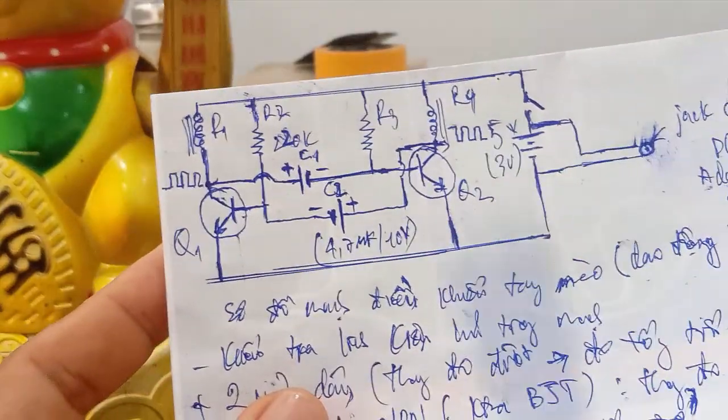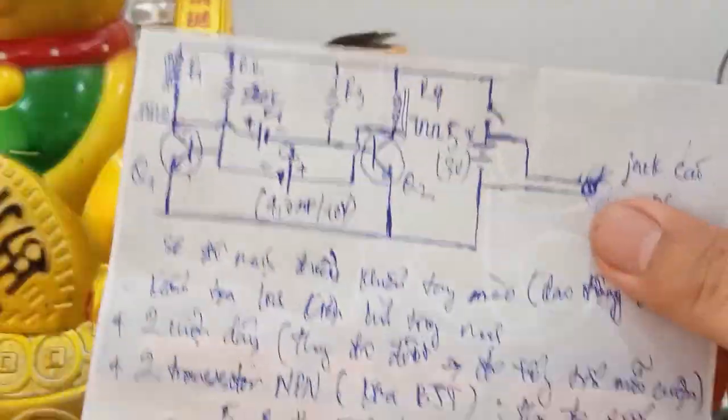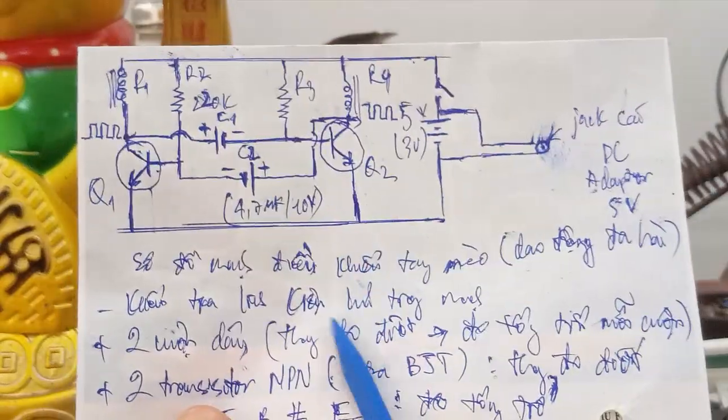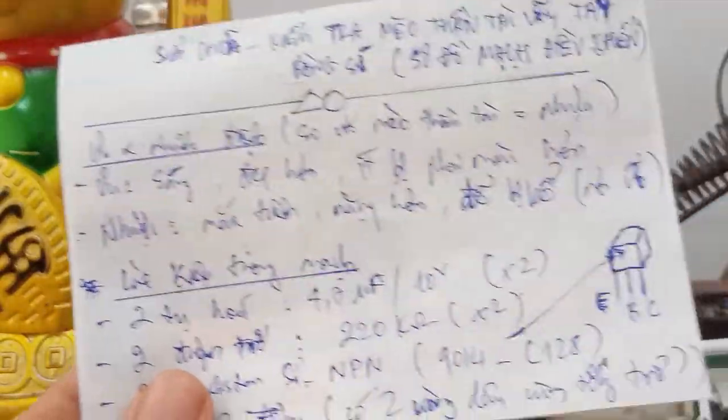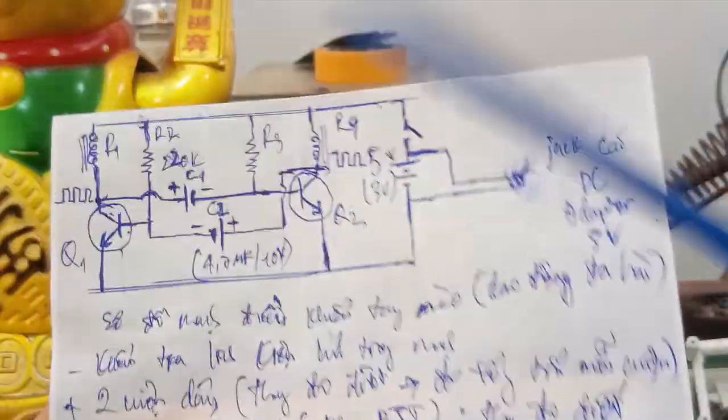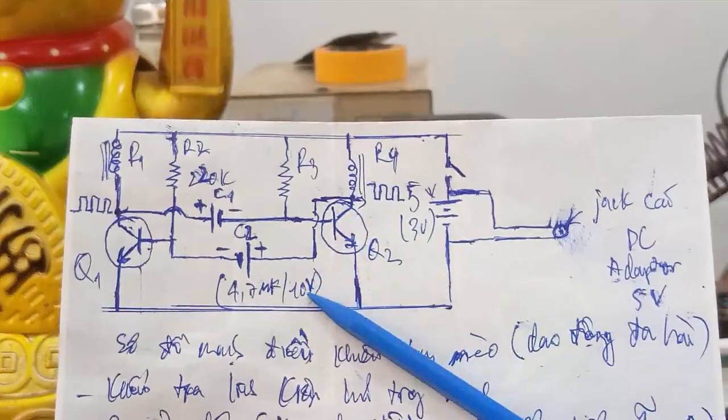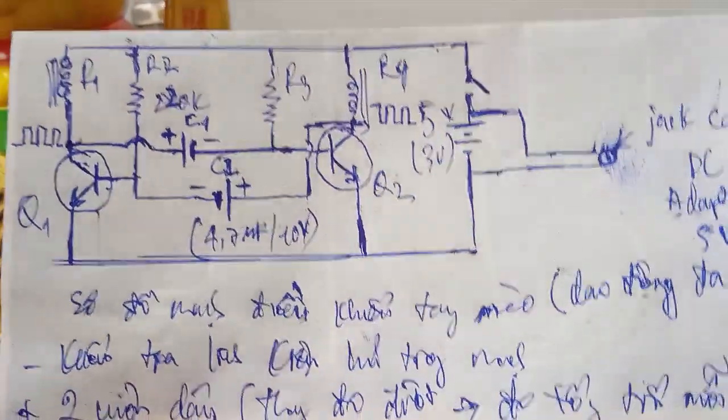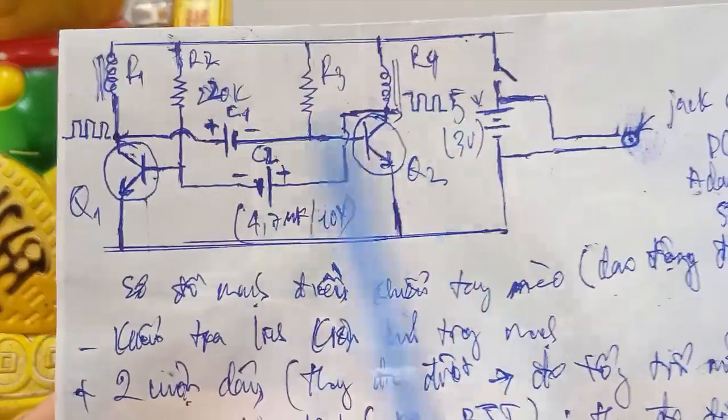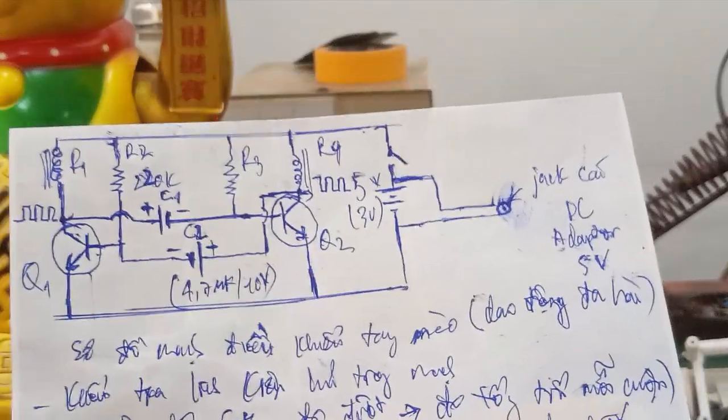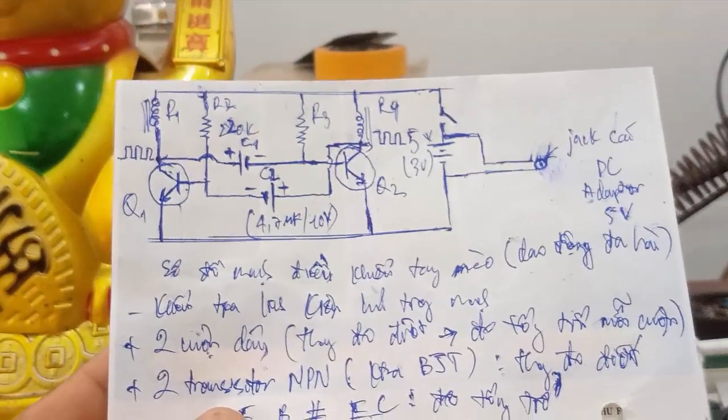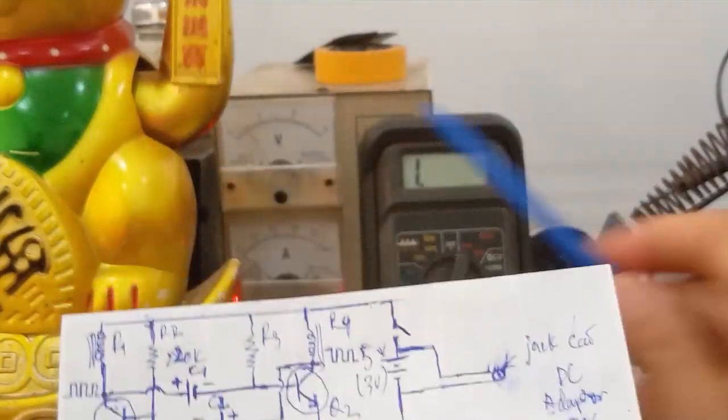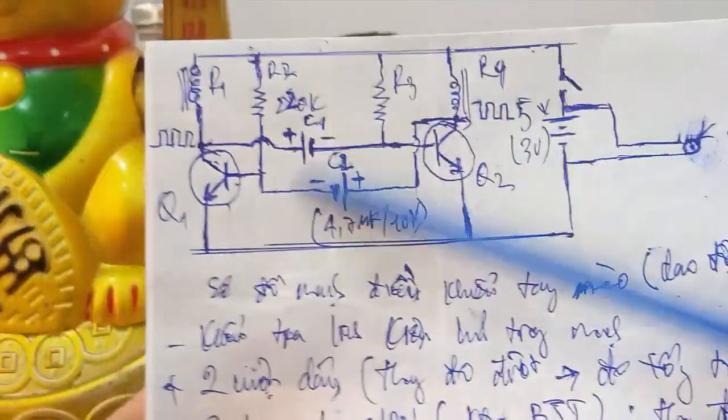Tiếp theo là phần kiểm tra mạch. Mình sẽ check sửa chữa. Nếu các bạn muốn cái sơ đồ mạch, các bạn có thể xài sơ đồ mạch. Hoặc các bạn có thể thiết kế mạch như sơ đồ. Mình có thể ghi ở phần mô tả. Rất dễ cho các bạn có thể tải xuống. Đây có thể vẽ trơn cái sơ đồ. Rất dễ cho các bạn vẽ lại. Sơ đồ đó. Video này mình có nói.